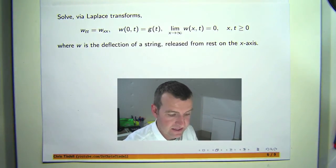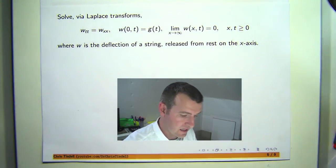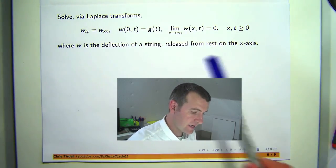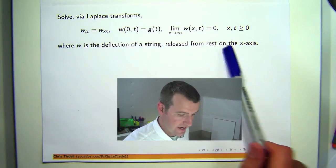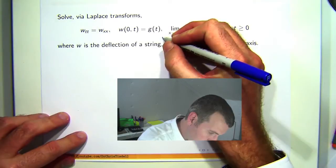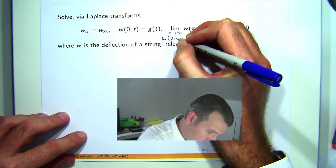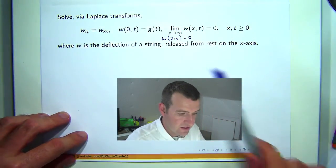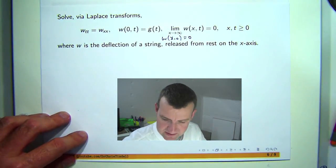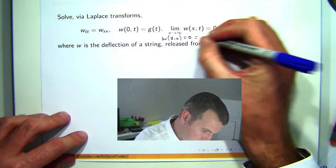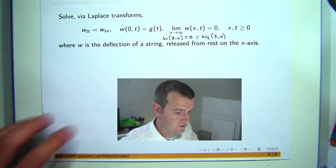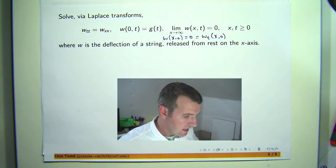As x goes to infinity, the deflection of the string goes to zero. The string is released from rest and lies on the x-axis. So when time t equals zero, the string lies on the positive x-axis, and the string is released from rest, so this derivative here is zero at time t equals zero.